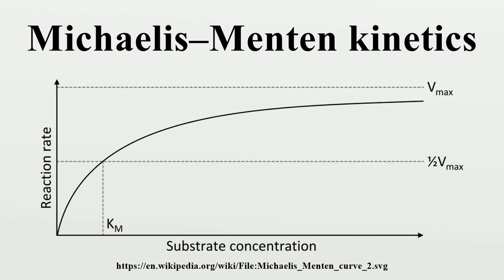In biochemistry, Michaelis-Menten kinetics is one of the best-known models of enzyme kinetics. It is named after German biochemist Leonor Michaelis and Canadian physician Maud Menten. The model takes the form of an equation describing the rate of enzymatic reactions by relating reaction rates to the concentration of a substrate S.